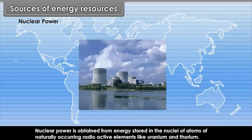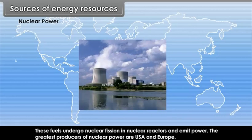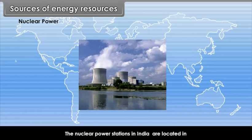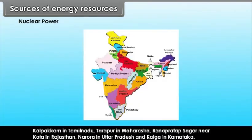Nuclear power is obtained from energy stored in the nuclei of atoms of naturally occurring radioactive elements like uranium and thorium. These fuels undergo nuclear fission in nuclear reactors and emit power. The greatest producers of nuclear power are the USA and Europe. Nuclear power stations in India are located in Kalpakam in Tamil Nadu, Tarapur in Maharashtra, Rana Pratap Sagar near Kota in Rajasthan, Narora in Uttar Pradesh and Kaiga in Karnataka.